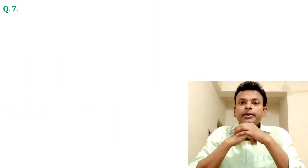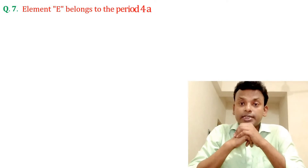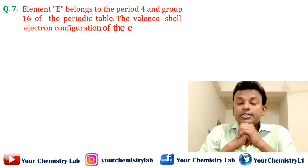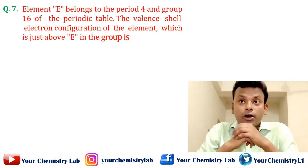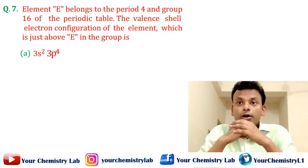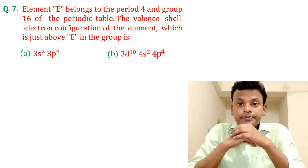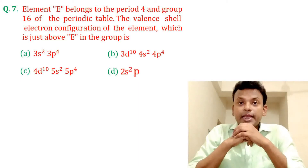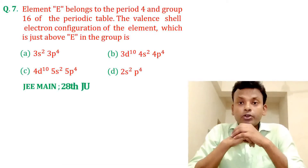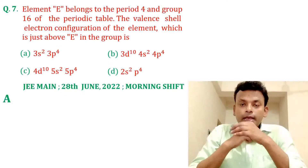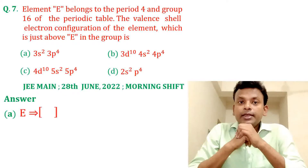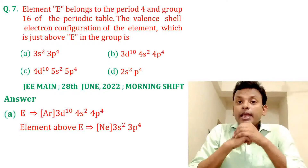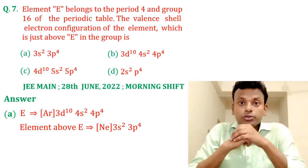Question 7: Element E belongs to period 4 and group 16 of the periodic table. The valence shell electronic configuration of the element just above E in the group is — option A, option B, option C, and option D. This question was set in JEE Main 28th June 2022 morning shift. Answer: option A is the correct answer. E = [Ar] 3d¹⁰ 4s² 4p⁴. Therefore, the element above E has configuration [Ne] 3s² 3p⁴.